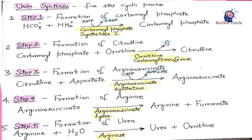In the fourth step, argininosuccinate splits into arginine and fumarate. Fumarate enters the citric acid cycle, and the enzyme involved is argininosuccinate lyase. In the fifth step, arginine reacts with water in a hydrolytic reaction to form urea and regenerate ornithine. This reaction is catalyzed by arginase.